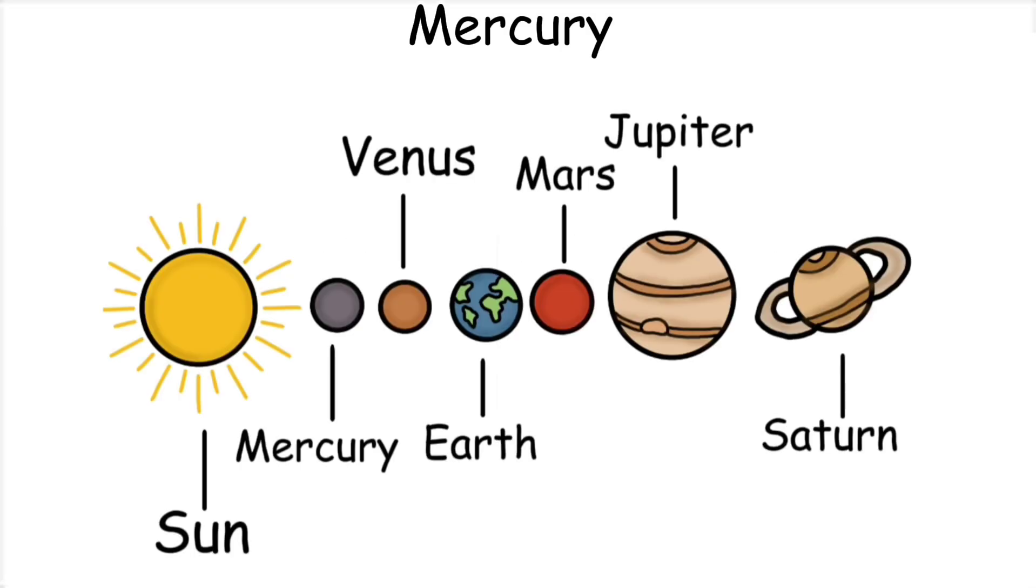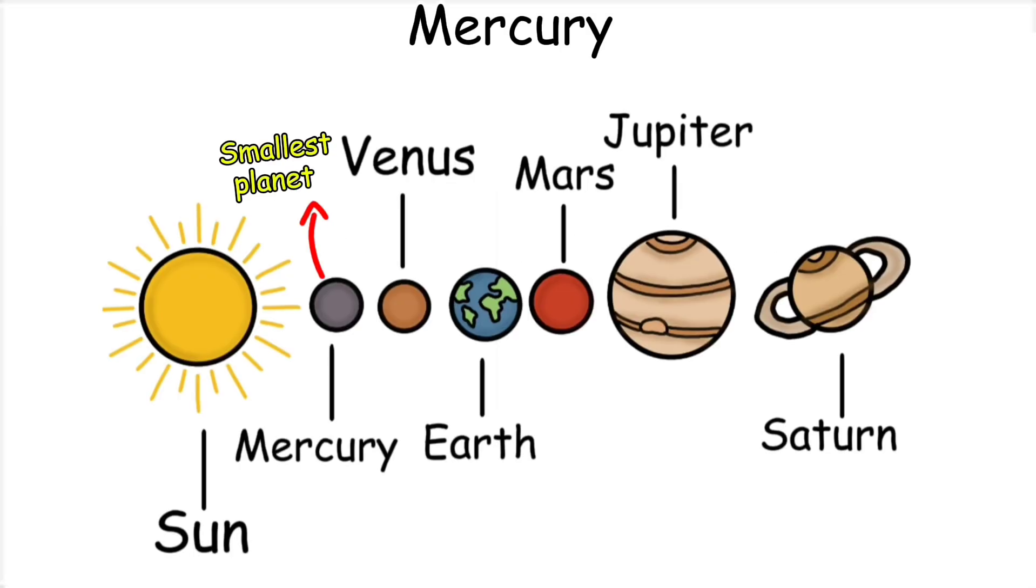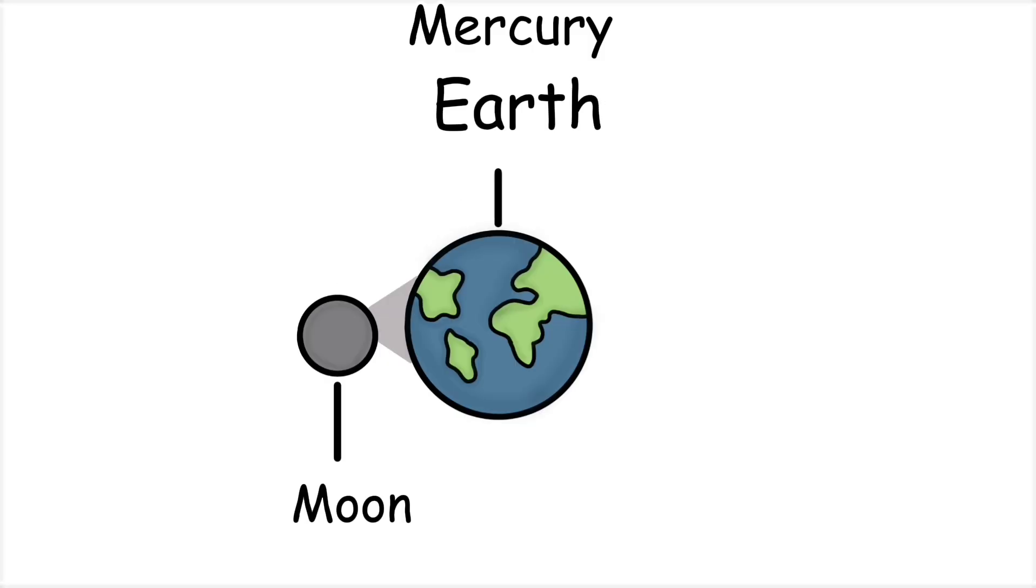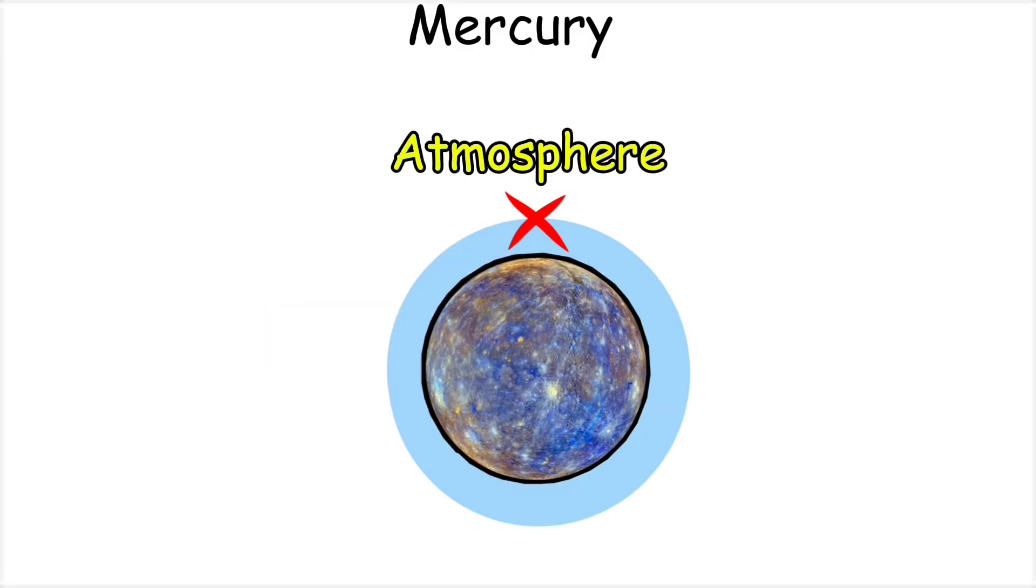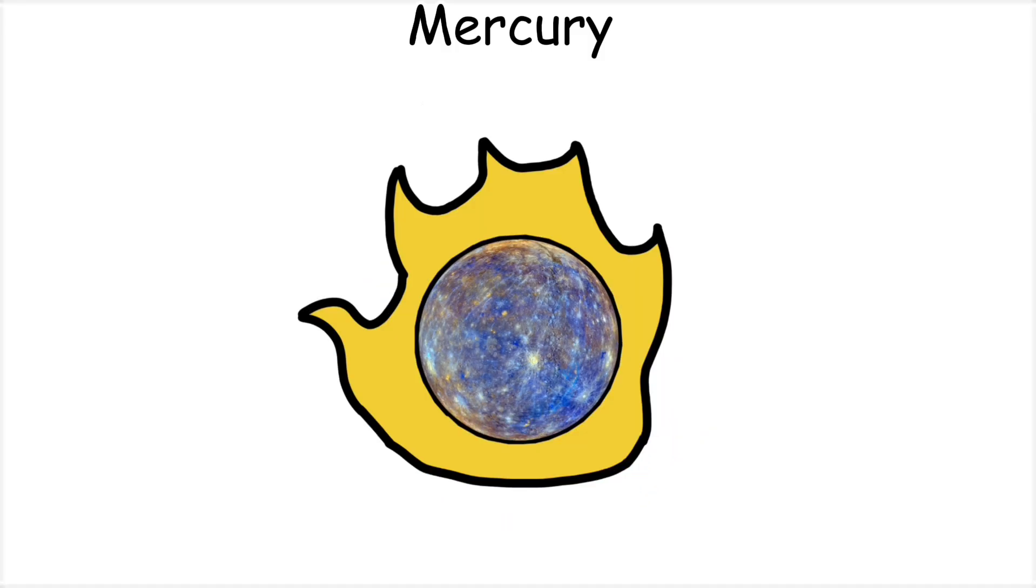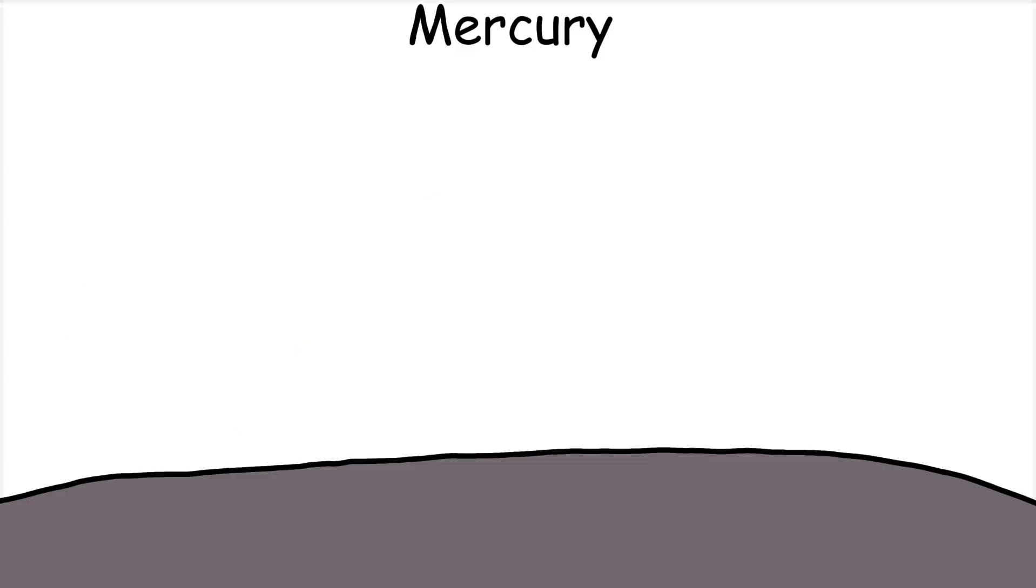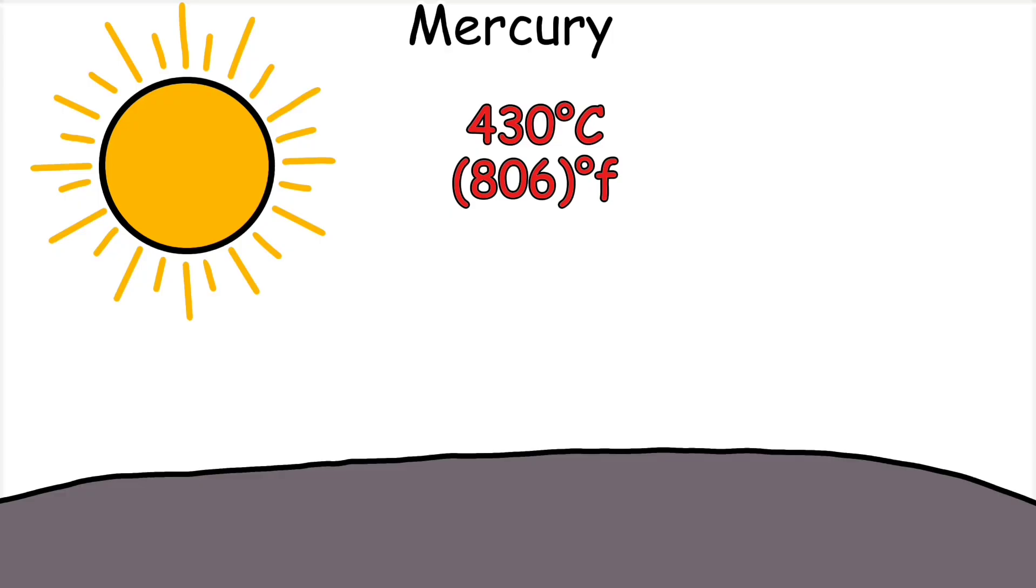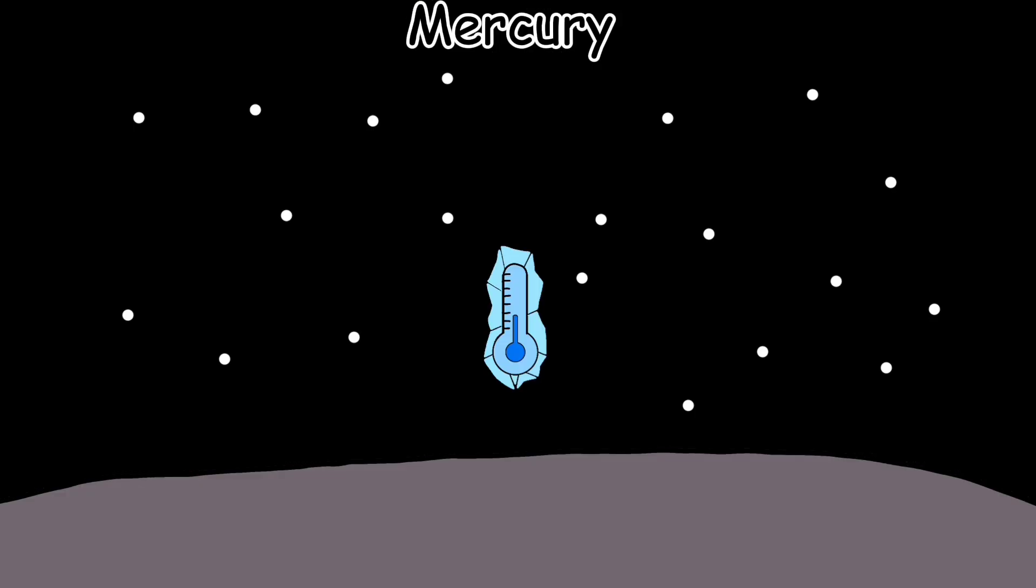Mercury is the smallest planet in our solar system and the closest to the sun. Its size is just slightly larger than Earth's moon. Mercury has almost no atmosphere, only a very thin exosphere, which means it cannot trap heat or regulate temperature. Because of this, the planet experiences extreme temperature changes. During the day, the surface can reach up to 430 degrees Celsius, while at night it drops to around minus 180 degrees Celsius.